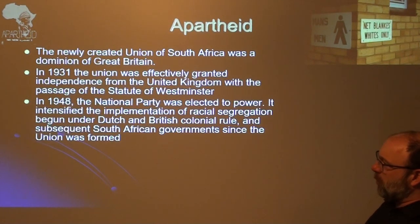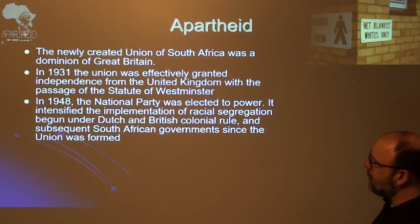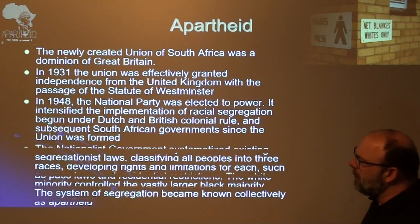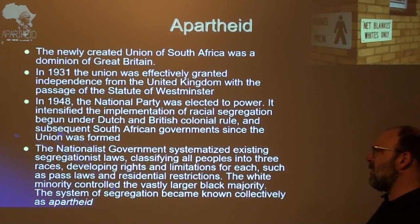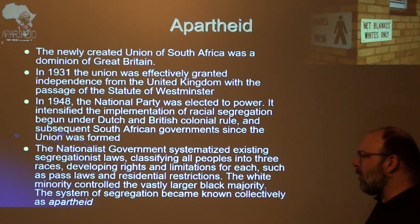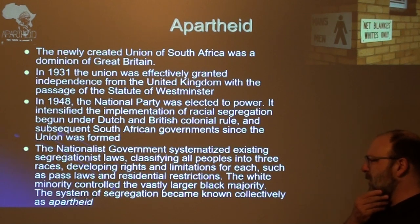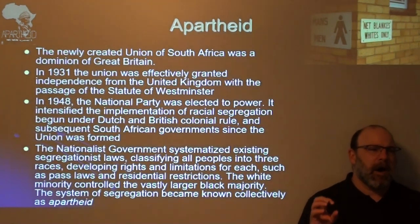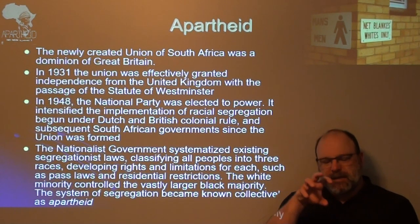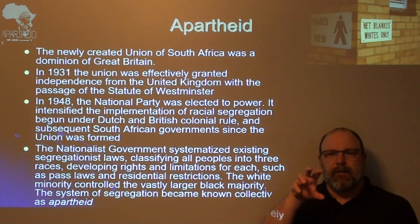In 1948, three years after World War II, the National Party was elected to power in South Africa. It intensified the implementation of racial segregation begun under Dutch and British colonial rule. The Nationalist government systematized existing segregationist laws, classifying all peoples into three races, developing rights and limitations for each — such as pass laws and residential restrictions — with the white minority controlling the vastly larger black majority. This system of segregation became known collectively as apartheid.